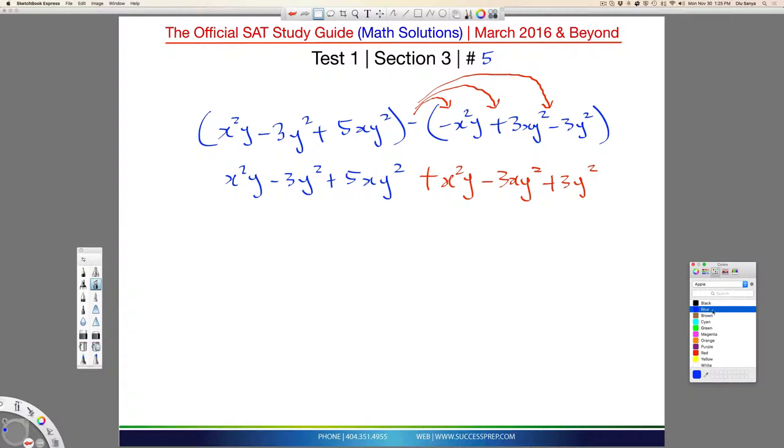So we look for like terms, like terms, and see what kind of goes together, if any. We notice that the negative 3y squared here goes with this guy, right? This is negative 3y squared, and this is positive 3y squared, so they cancel out each other.